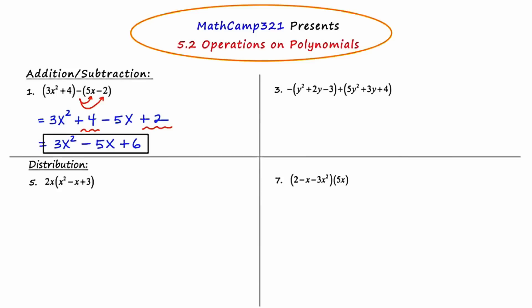Let's take a look at number 3. By the way, these numbers correlate to a worksheet that my class is working on — we're doing the odd ones. So if you're not in my class, that's why the numbering is only the odd numbers.